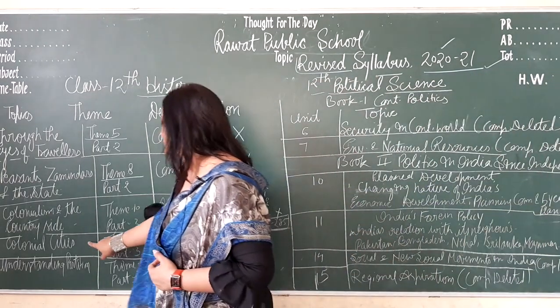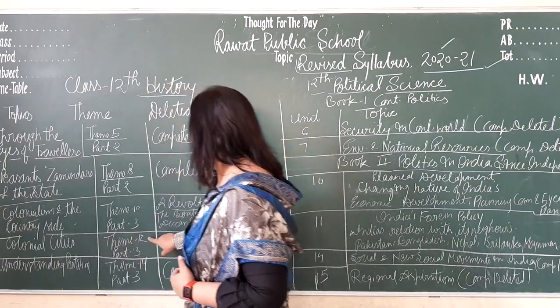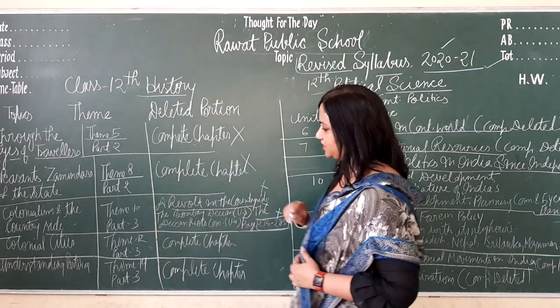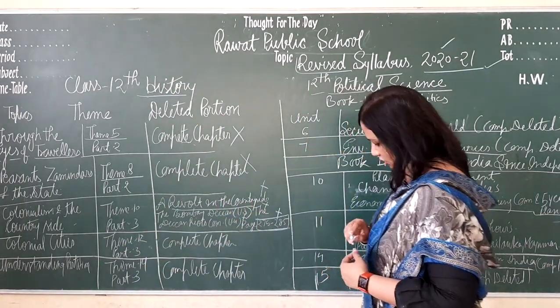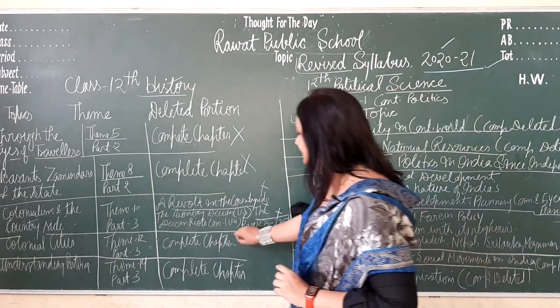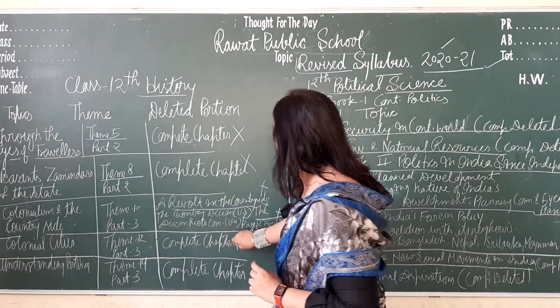Colonials — it is Theme 12, Part 3. The Book's Chapter 12 is completely deleted.